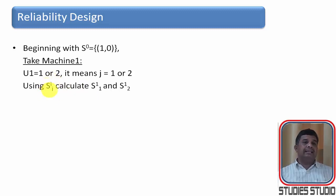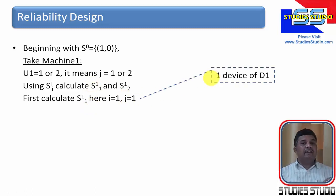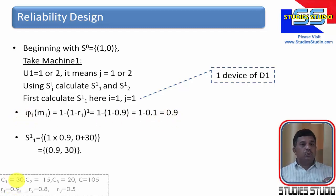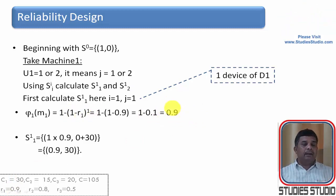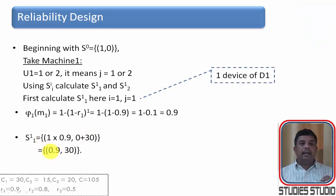S_{1,1} means one device of D1. The reliability of one device of D1 is 0.9. Multiplying with S_0's reliability (1) and adding S_0's cost (0) to the cost of one D1 (30), we get S_{1,1} = (0.9, 30).